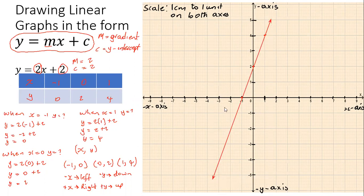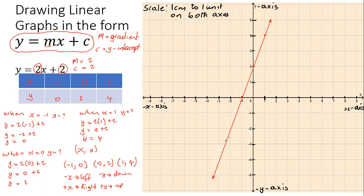Now let's label it: there is the line y = 2x + 2 — and that's how you graph a straight line. Note that where the line intersects the y-axis is at two, which confirms our y-intercept is two. Thank you for watching, and enjoy the rest of your day!